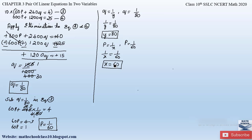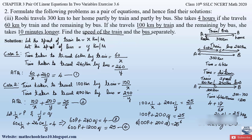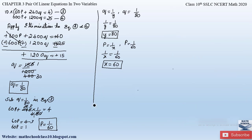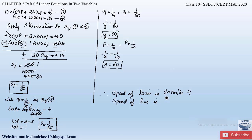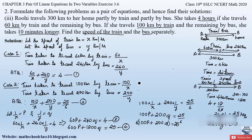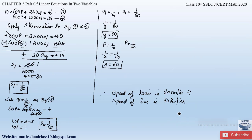So we have found x = 60 and y = 80, which are the speed of the train and speed of the bus in kilometers per hour. Therefore, the speed of the train is 60 kilometers per hour and the speed of the bus is 80 kilometers per hour.